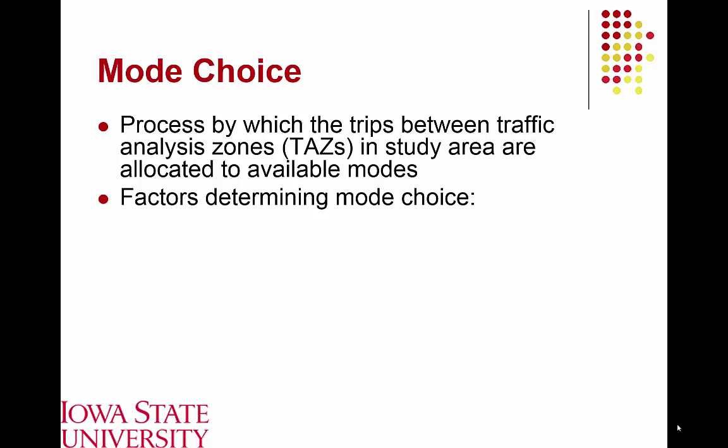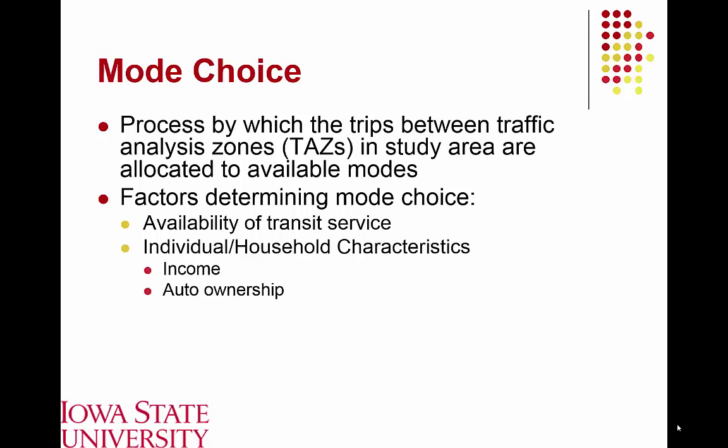When we try to develop models for this mode choice decision, there are a few factors that will determine which modes will be selected. The first and most obvious is what sort of transit services are actually available. In smaller, suburban, and rural communities, we obviously aren't going to have light rail transit systems, but we would likely have bus services. The decision as to whether to use a bus versus personal automobile versus carpooling can be related back to individual or household characteristics. For example, lower income families may not be able to afford an automobile and may be forced to become what we call captive transit riders.